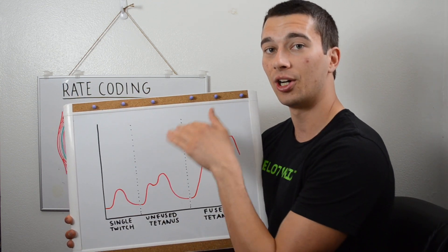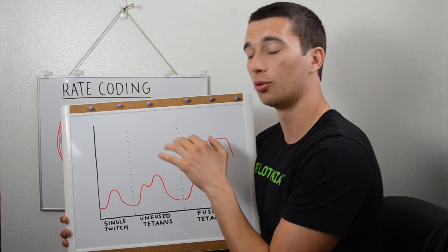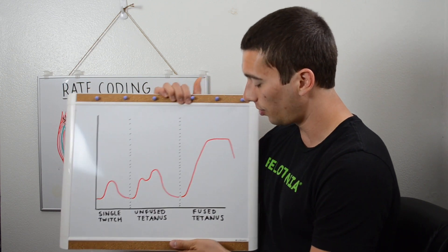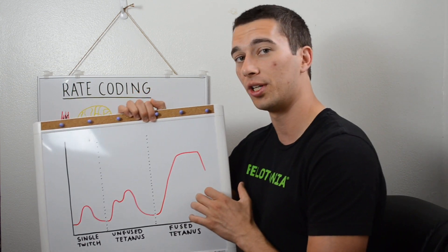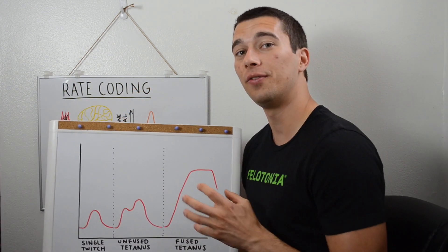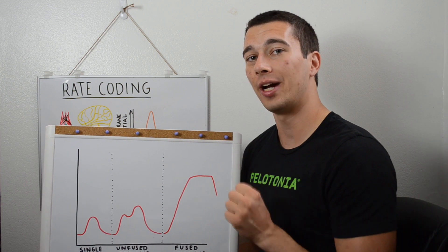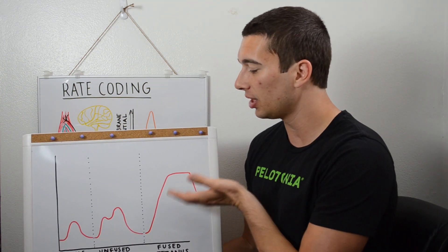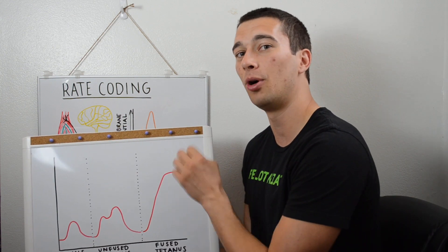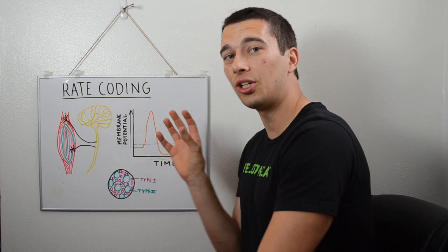So that's what we call fused tetanus, and this is where we're actually going to get the most force out of a muscle. So to review, rate coding is the rate of action potential discharge to the muscle, and it can accumulate to produce higher motor recruitment.